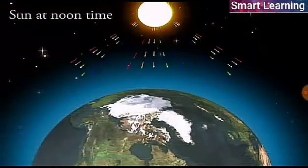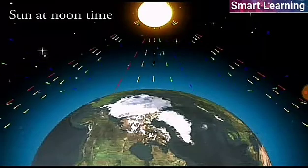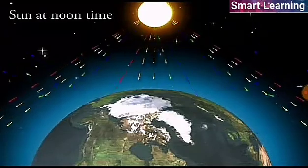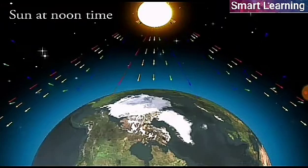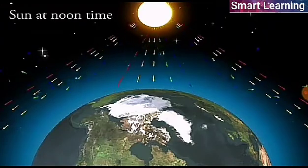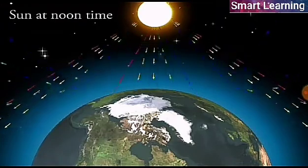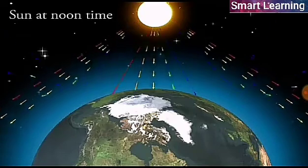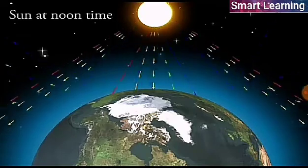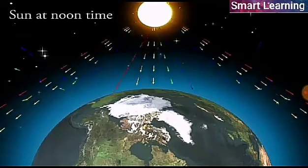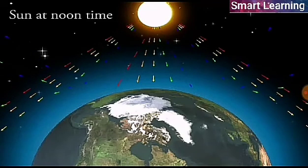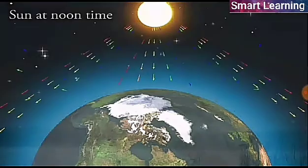At noon time when the sun is nearly overhead, the sunlight passes through the rarer layers of the air and covers shorter distance before reaching our eyes. Only a small amount of blue light gets scattered and most of the light of other colors reaches us. As a result, sun appears white.